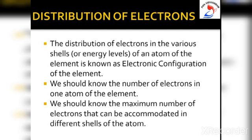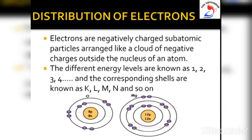In order to write the electronic configuration of an element we should know two things: first, the number of electrons in one atom of the element; and second, the maximum number of electrons that can be accommodated in different shells. The number of electrons in an atom is given by the atomic number. For example, if the atomic number is 12, the atom contains 12 electrons.